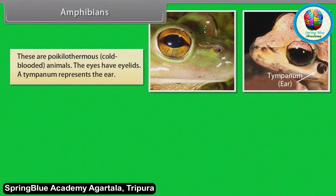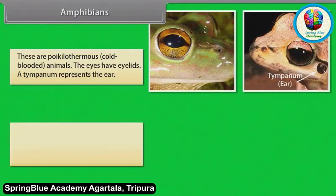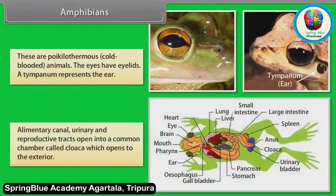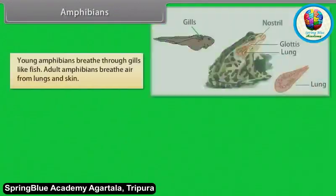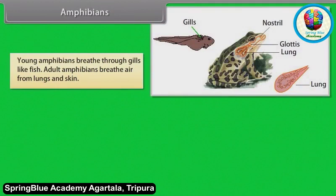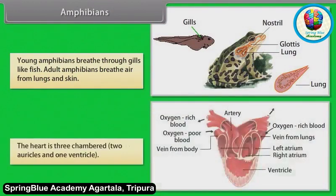A tympanum represents the ear. Alimentary canal, urinary and reproductive tracts open into a common chamber called cloaca, which opens to the exterior. Young amphibians breathe through gills like fish. Adult amphibians breathe air from lungs and skin. The heart is three-chambered — two auricles and one ventricle.